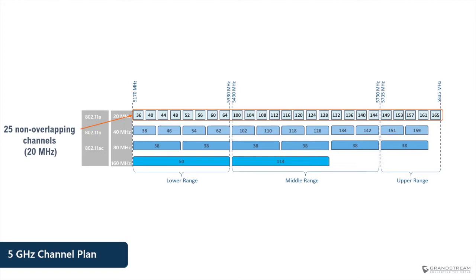Now let's review the 5 gigahertz channel plan. The first thing you will notice is that the 5 gigahertz band has many more channels of 20 megahertz, and they are non-overlapping. Unlike 2.4 gigahertz where adjacent channels overlap, in the 5 gigahertz band adjacent channels do not overlap — they are considered adjacent non-overlapping channels. With channel bonding on 5 gigahertz, we can create wider channels of 40, 80, and even 160 megahertz depending on the 802.11 standard being implemented. So while channel bonding on 2.4 band is not recommended, using 40 megahertz channels on 5 gigahertz can be beneficial.